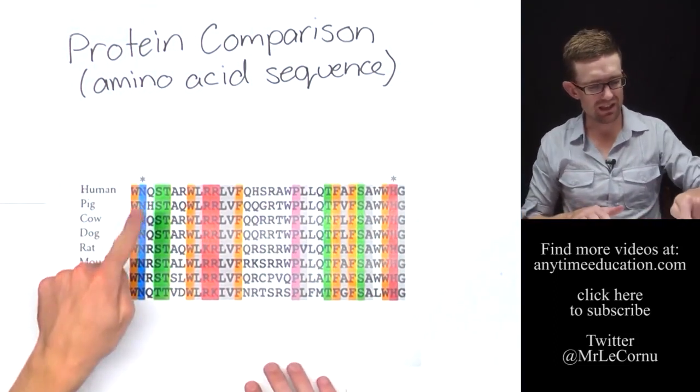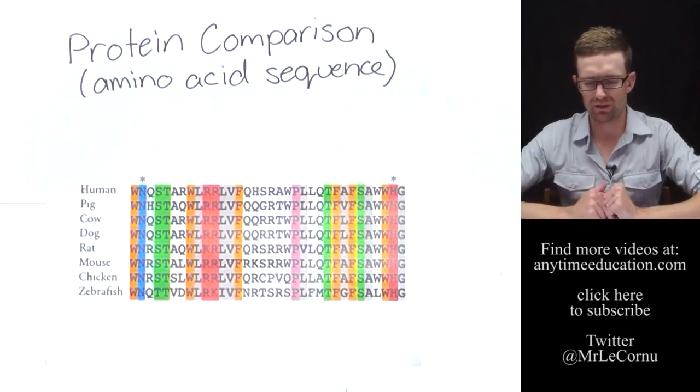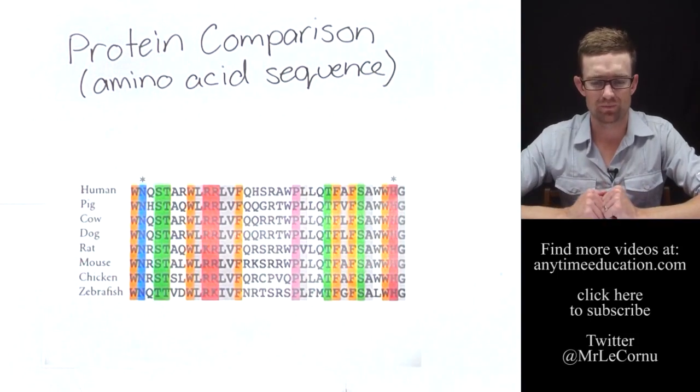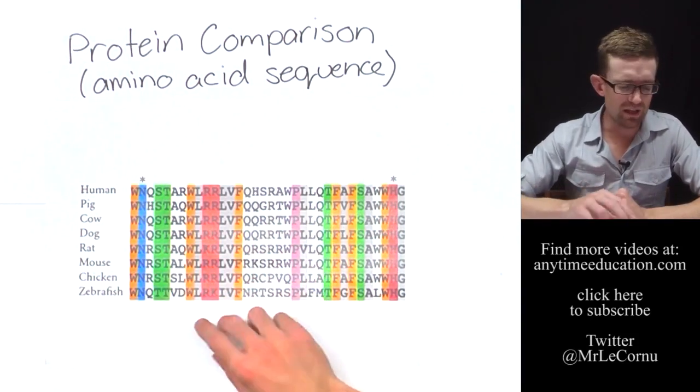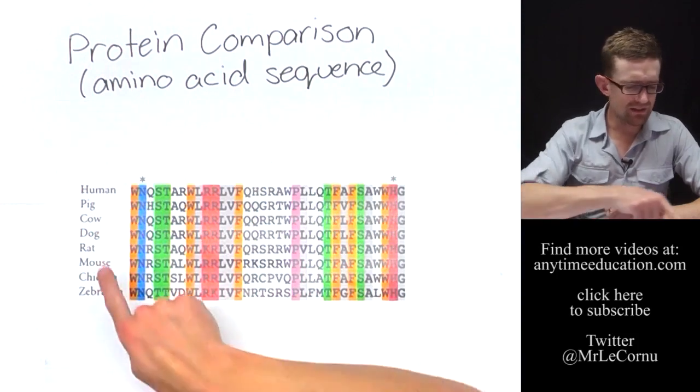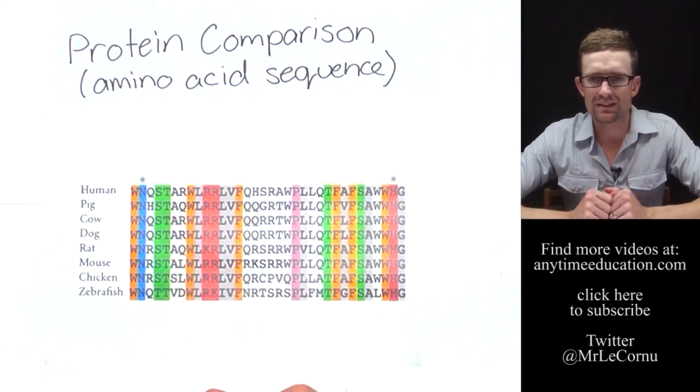here's a table of cytochrome C analysis from eight different species. What you can see is each letter is used to represent a different amino acid. And I want to play one more little game here. I want you to pause the video in a minute, analyse this information, and answer this question.